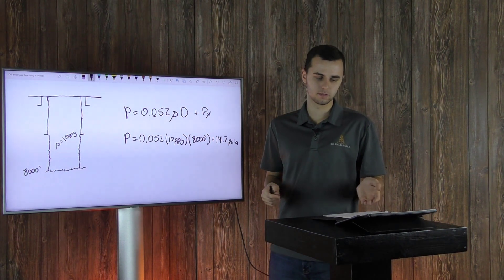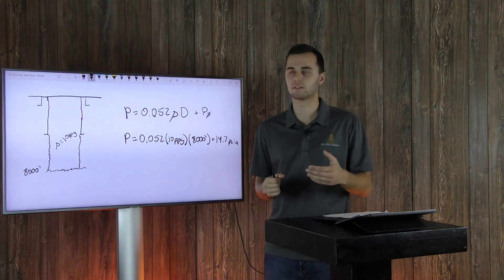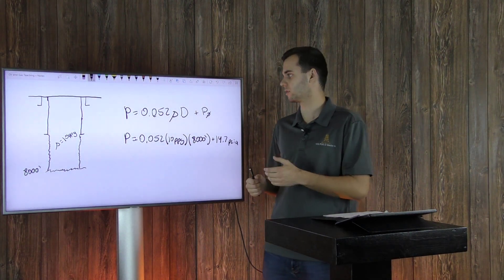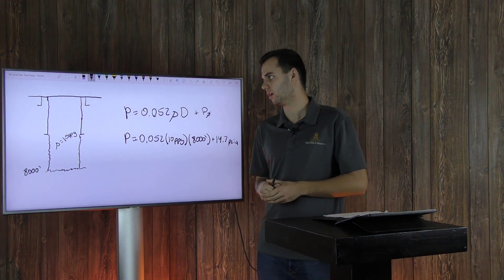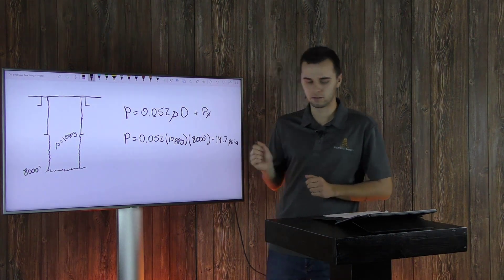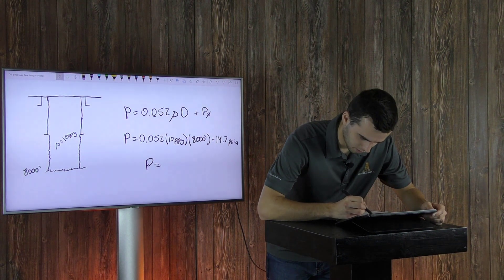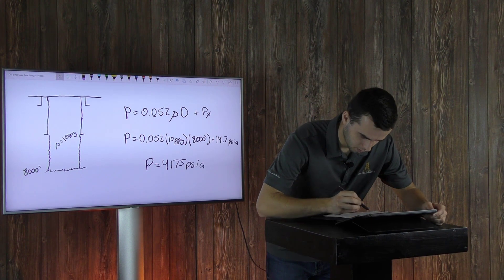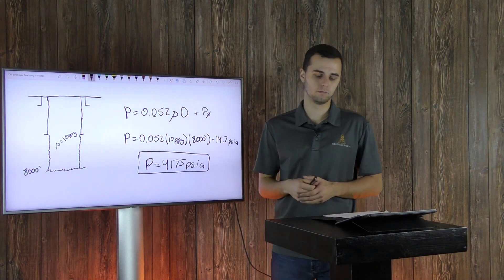And so as you see, let's go through this again. This is in pounds per gallon, this is your constant. Your pressure will be in psia and 8,000 feet, which is your depth that you're trying to calculate the pressure exerted by a mud. And so this right here again is your atmospheric pressure, which you can include if you want your value to be in psia. And so your pressure at 8,000 feet exerted by a mud will be 4,175 psia.